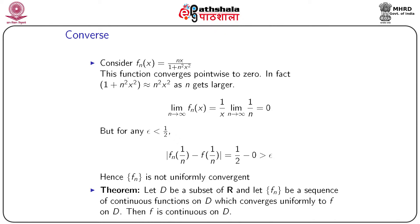We state an important theorem: let d be a subset of ℝ and let fn be a sequence of continuous functions on d which converges uniformly to f on d; then f is also continuous on d. We omit the proof and just state this result.